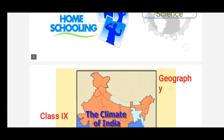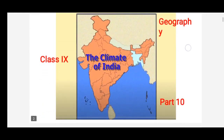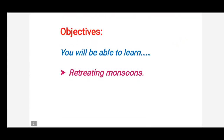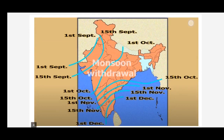Welcome back. In the geography part 9, in the last video we have seen how the monsoon advances in India — it begins on the 1st of June, covering the coast of Kerala, and covers the whole of India by 15th July. In this video, at the end of this class you will be able to learn about the retreating monsoons.